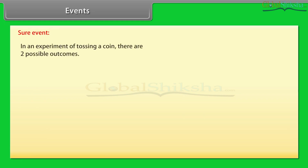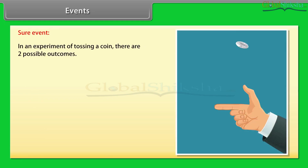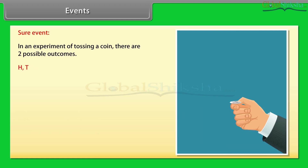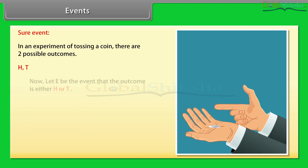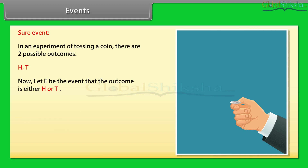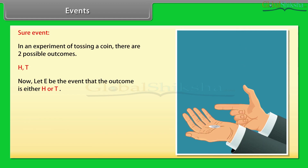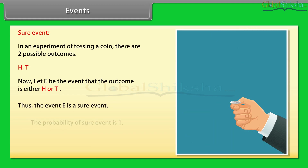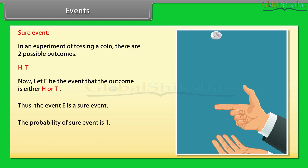Sure event: in an experiment of tossing a coin, there are two possible outcomes: H and T. Now let E be the event that the outcome is either H or T. Thus, the event E is a sure event. The probability of a sure event is one.